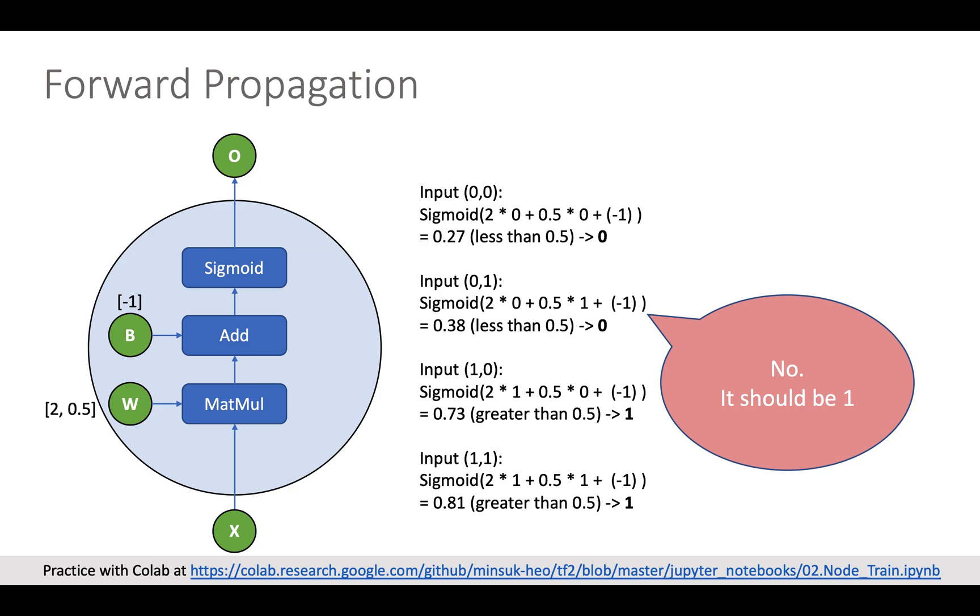After back propagation, we do forward propagation with newly updated variable. You see there is an error on the second input this time.